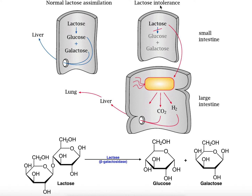In lactose intolerance, the reaction of hydrolyzing lactose into glucose and galactose does not occur, because the enzyme lactase is absent. So if you eat a cheese pizza — or really any dairy product containing cheese — you're consuming lactose, and if you don't have the lactase enzyme, lactose levels are going to accumulate in your intestines. It's dose-dependent: the more lactose you consume, the more builds up in the lumen of the small intestine.